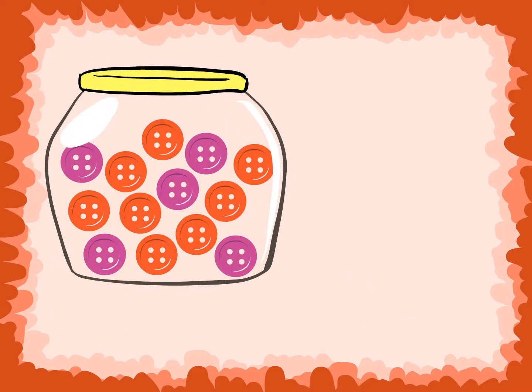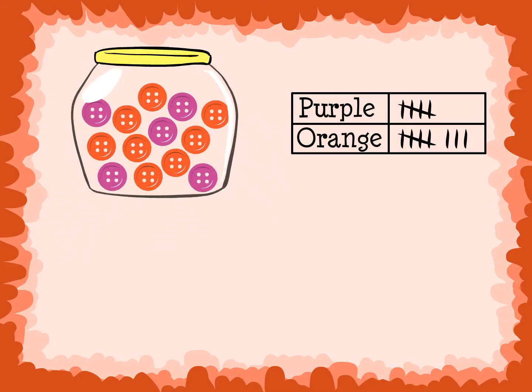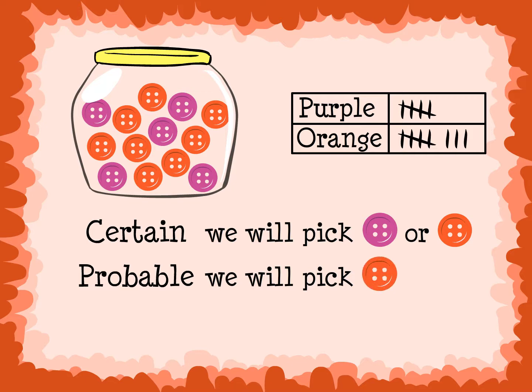If we have a jar of buttons, let's make a tally chart to see how many buttons there are in each color. There are 5 purple buttons and 8 orange buttons. It is certain that you will pick a purple or orange button out of the jar. There are more orange buttons, so it is probable that we will pick an orange button out of the jar.